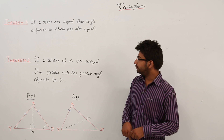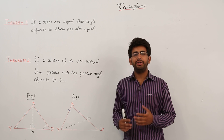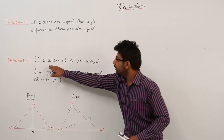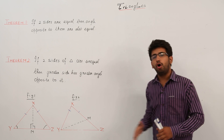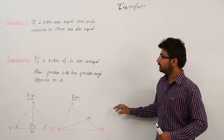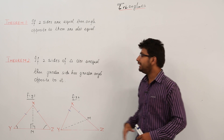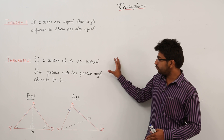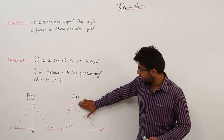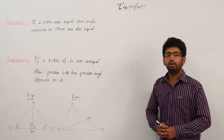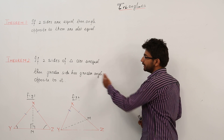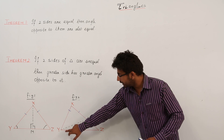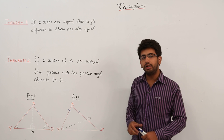Now, in the second theorem, which is also related to angles and sides, the second theorem states that if two sides of a triangle are unequal, then the greater side has a greater angle opposite to it. For this theorem, we will consider figure number two. I'll again state the theorem: it is in triangle XYZ.